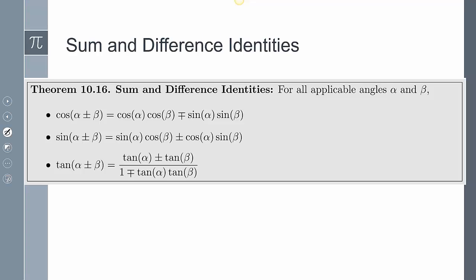Here are those identities. We have our cosine, sine, and tangent identities. Understanding the notation: if I'm adding two angles — alpha plus beta — that means I take the top row. If it's a minus, that means take the bottom row. When cosine is adding two angles, the result is a negative. When subtracting two angles, it's a positive.